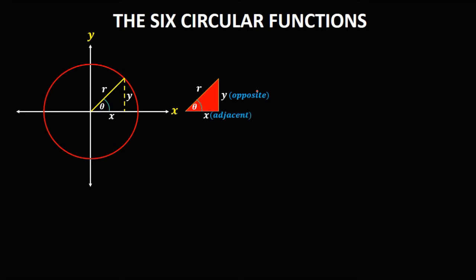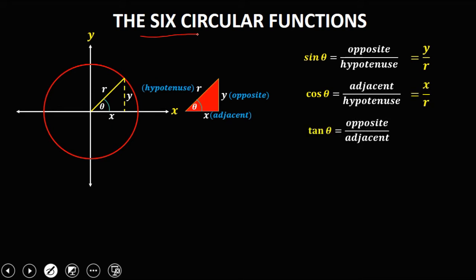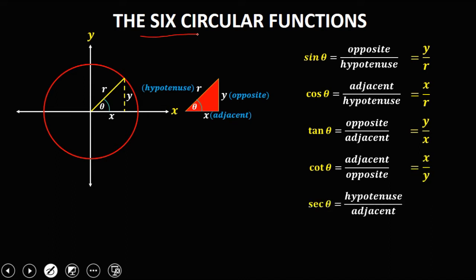y is the opposite, x is the adjacent, and r is the hypotenuse. To solve for these six circular functions: sine theta is opposite over hypotenuse, that's y over r. Cosine theta is adjacent over hypotenuse, that's x over r. Tangent theta is opposite over adjacent, that's y over x. Cotangent theta is adjacent over opposite, that's x over y. Secant theta is hypotenuse over adjacent, that's r over x. And cosecant theta is hypotenuse over the opposite, that's r over y. So these are the six circular functions.